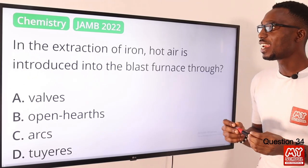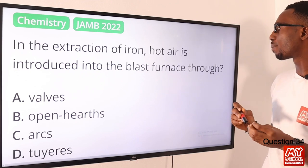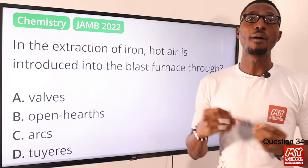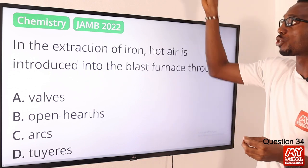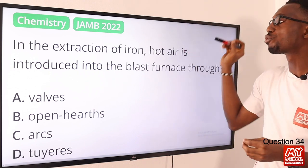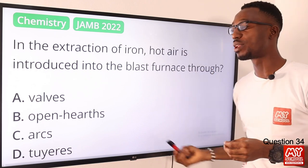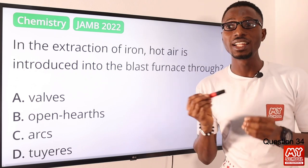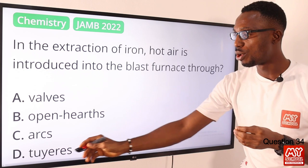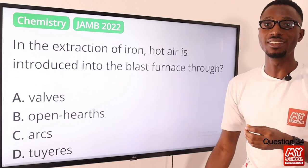Question 34. In the extraction of iron, hot air is introduced into the blast furnace through what? You load your ingredients from the top of the furnace. When you want to introduce this hot blast of air, it's actually through the bottom — through small pipes that we refer to as your tuyeres. So the correct option is option D.